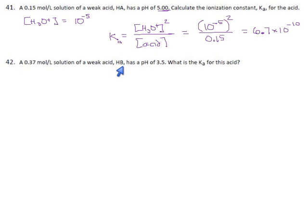0.37, the H3O+ is 10 to the minus 3.5, which is 3.16 times 10 to the minus 4 is our concentration for H3O+. One significant digit for the answer because they gave us a sloppy pH.